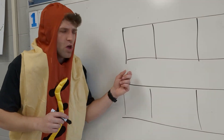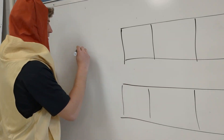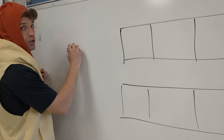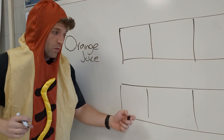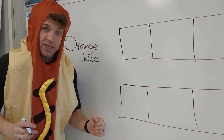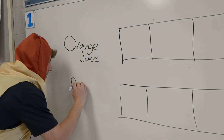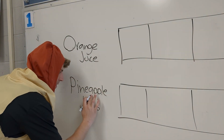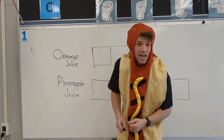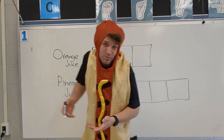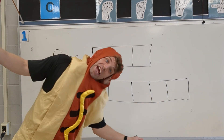Then you have to label what this 3 represents — this was our orange juice. And what was the 5 representing? Our pineapple juice. This is how you set up all your tape diagram problems to break down ratio problems. Because we love tape!